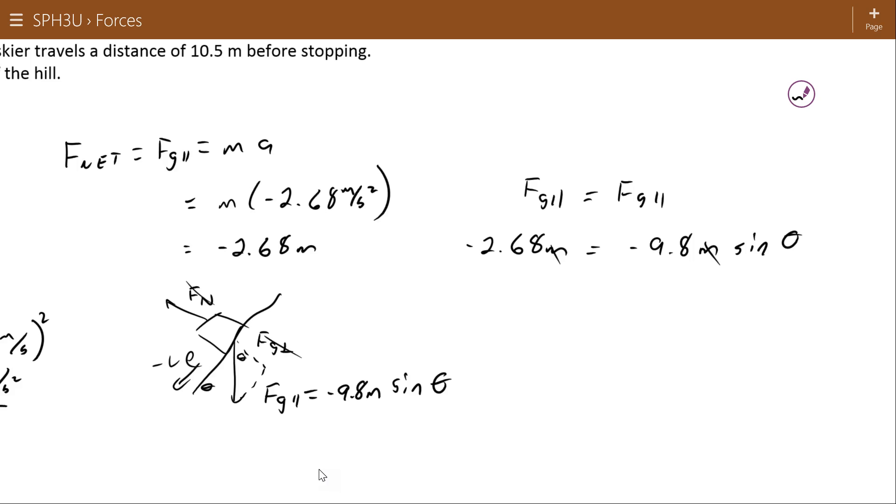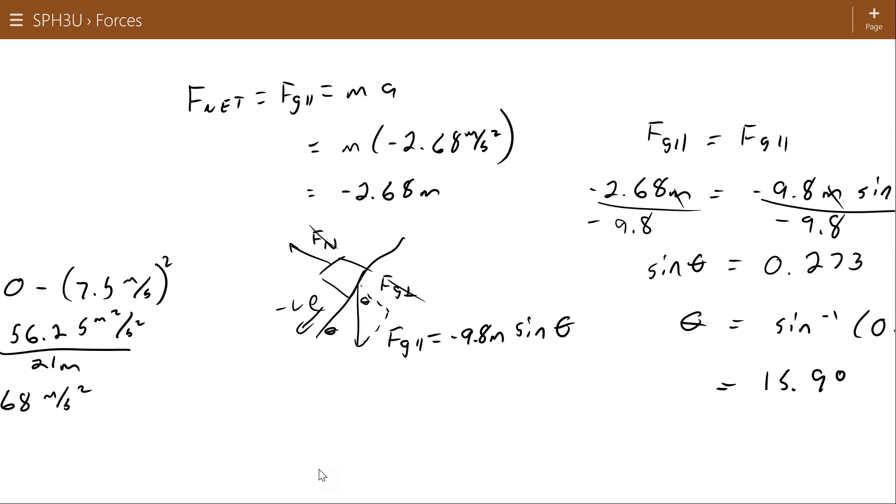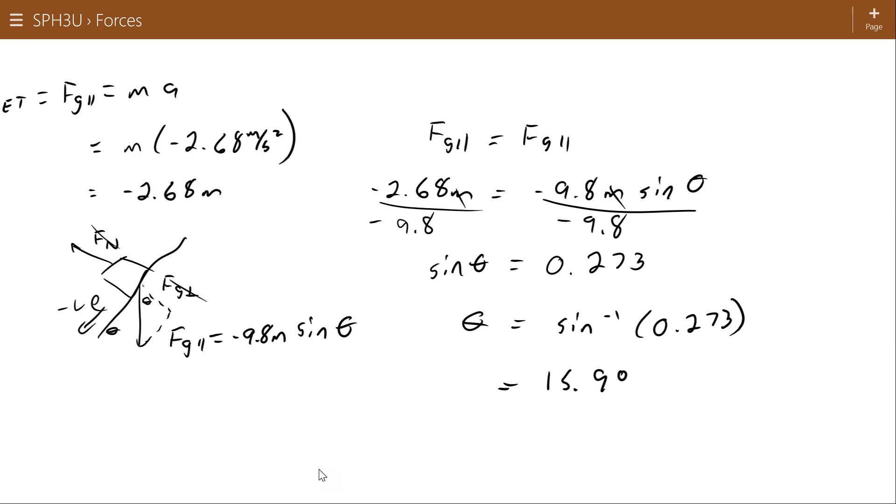2.68 divided by 9.8. Now a math person might get worried that I'm constantly canceling these masses out and treating it like you can divide by a variable. And they might say, but if the variable is equal to zero, then that doesn't work. But remember, these variables are representing the mass of an object. So the mass of an object isn't going to be zero. And so we don't have to worry about that. So there we go. We get 15.9 degrees. So given our kinematics information, we can find the acceleration. Assuming that acceleration is being caused by the force of gravity down the plane, we can set up those two equations for force of gravity down the plane. And we can see what incline must have led to that acceleration.